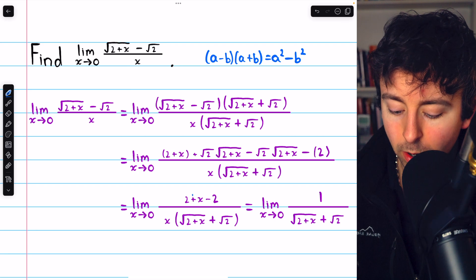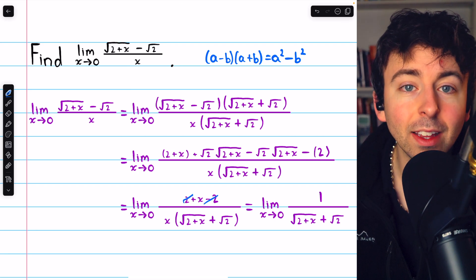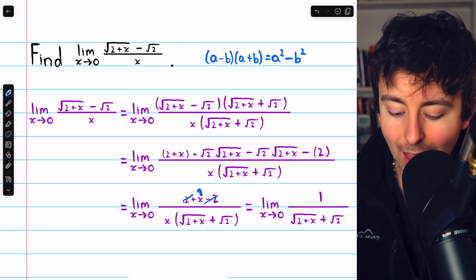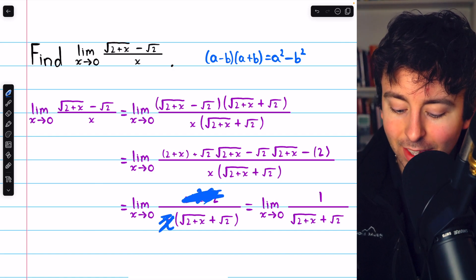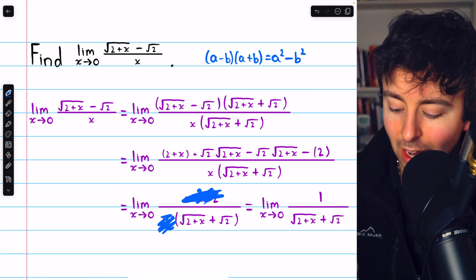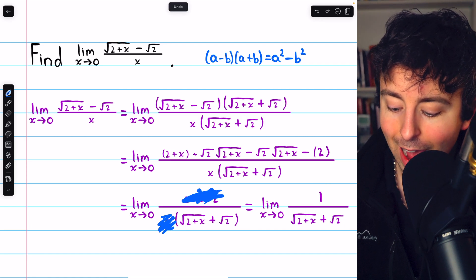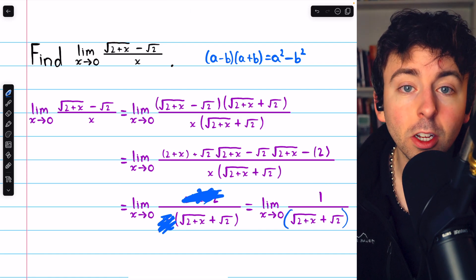Just like we said before, 2 minus 2. When we cancel those out, that just leaves x in the numerator, which we can cancel out with that x in the denominator. So now we just have 1 in the numerator, and the factor of x in the denominator is gone.